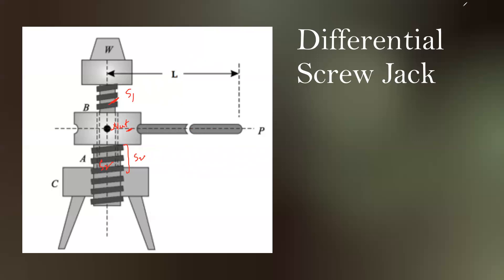The screw S1 does not rotate but is free to move in the vertical direction. This is an important feature of the differential screw jack: S1 moves up or goes down but does not rotate at all. S1 carries the vertical load, so the only motion possible in S1 is vertical motion.